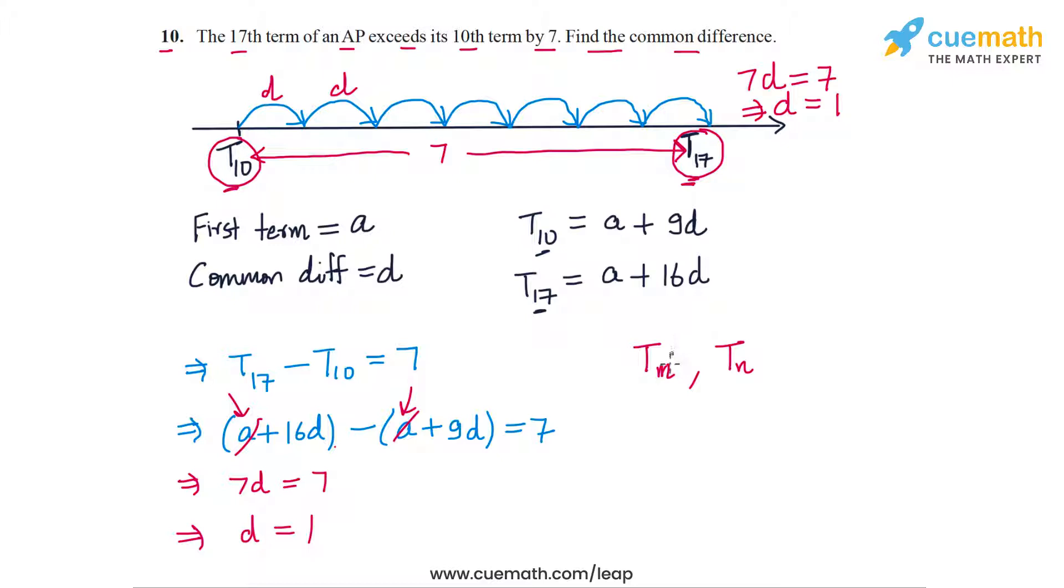In general, if you have a term tm and a term tn in an AP, to go from tm to tn you will have to make n minus m steps of d. For example, if you had an AP and you took the terms t20 and t50, then to go from t20 to t50 you would have to make 30 jumps of d. So the difference between t20 and t50 will be 30d. The difference of two terms of an AP does not depend on the first term of the AP.